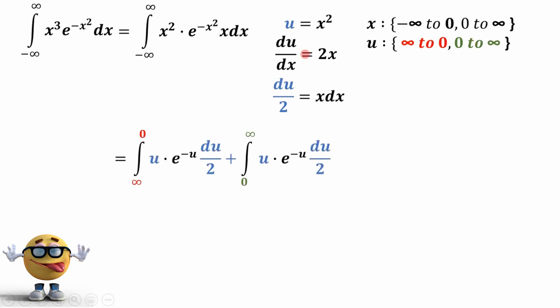So from here, we can substitute in our stuff. Rather than negative infinity to infinity, we'll go from infinity to 0 for the first part. This is our function with everything in. So x squared is u. E to the negative x squared is now just e to the negative u. And this x dx right here is du over 2. Hope you can see that.